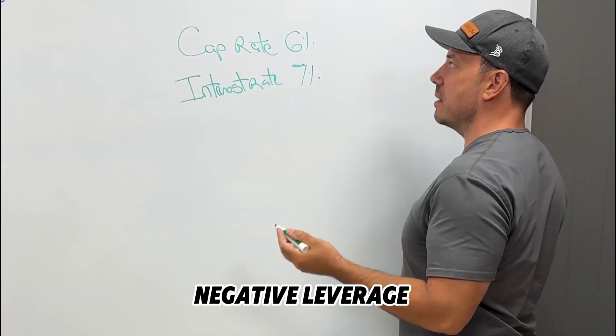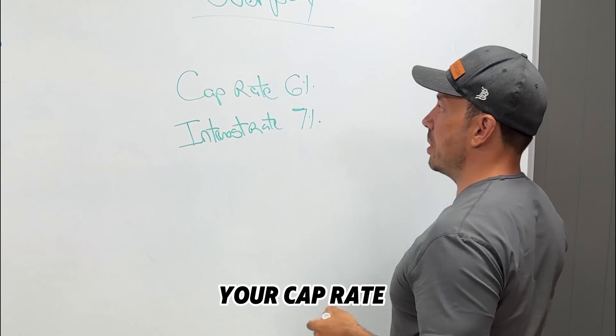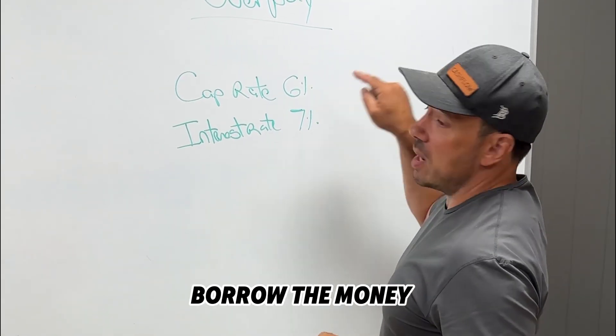This formula is called negative levered. You're negatively levered. Your interest rate is higher than your cap rate, which means it's costing you more to borrow the money than the property is making.